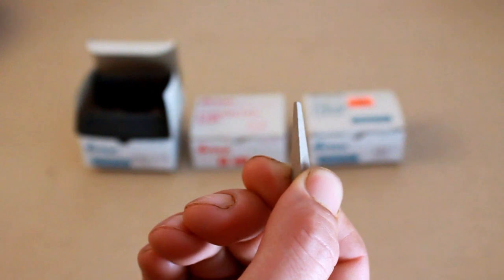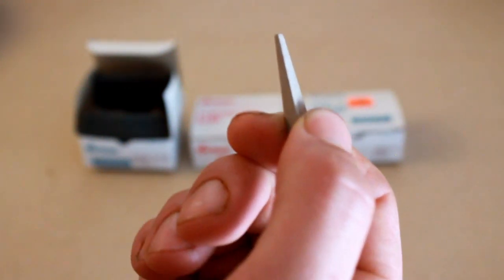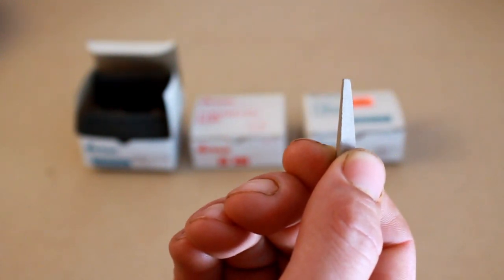You see this right here? This thing right here is formulated for cone 06. That means once it reaches 1828 degrees, it's going to start melting and bending because that's essentially its melting point. Sooner or later, if you let that keep melting, it's going to turn into one of these.